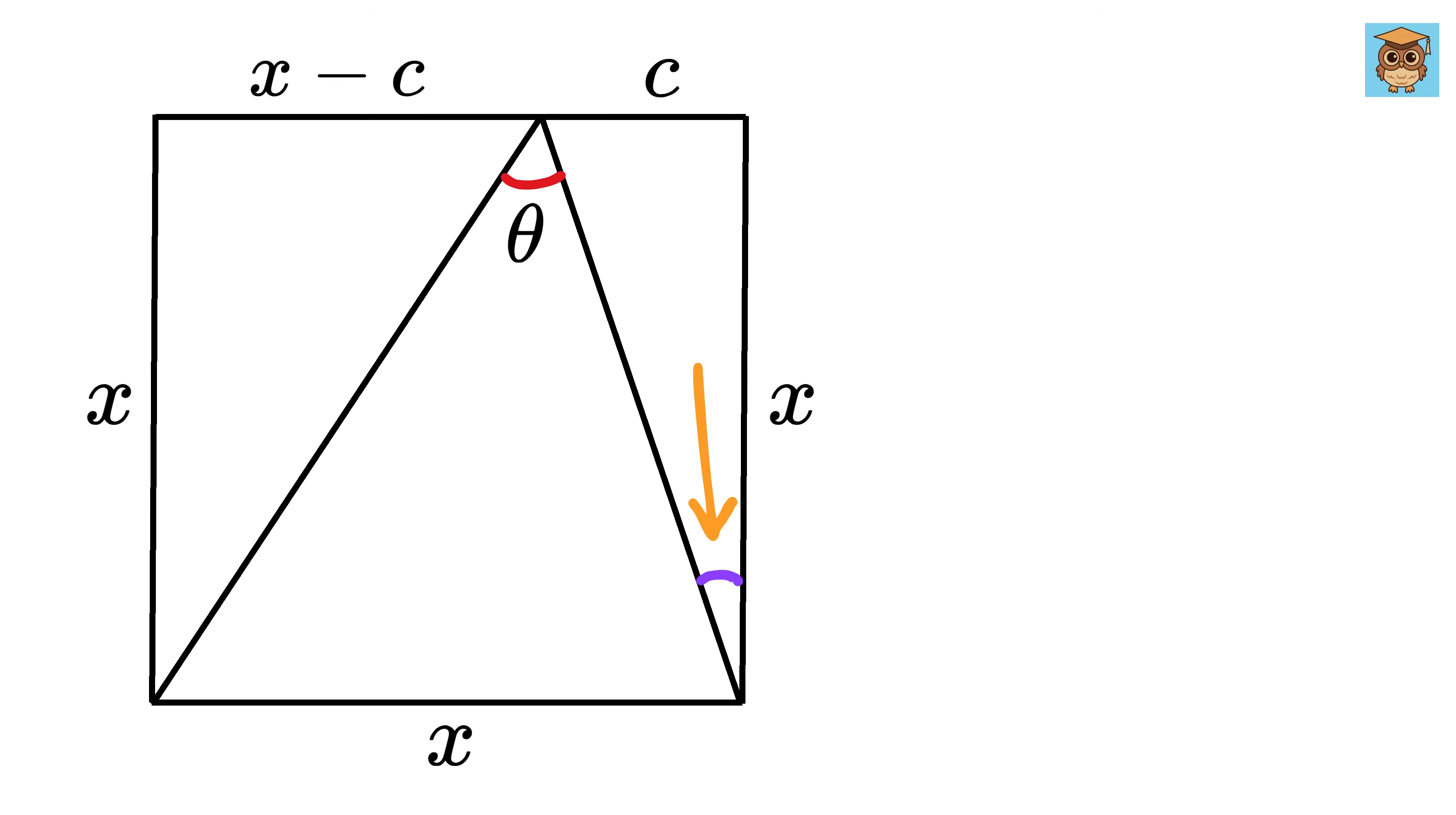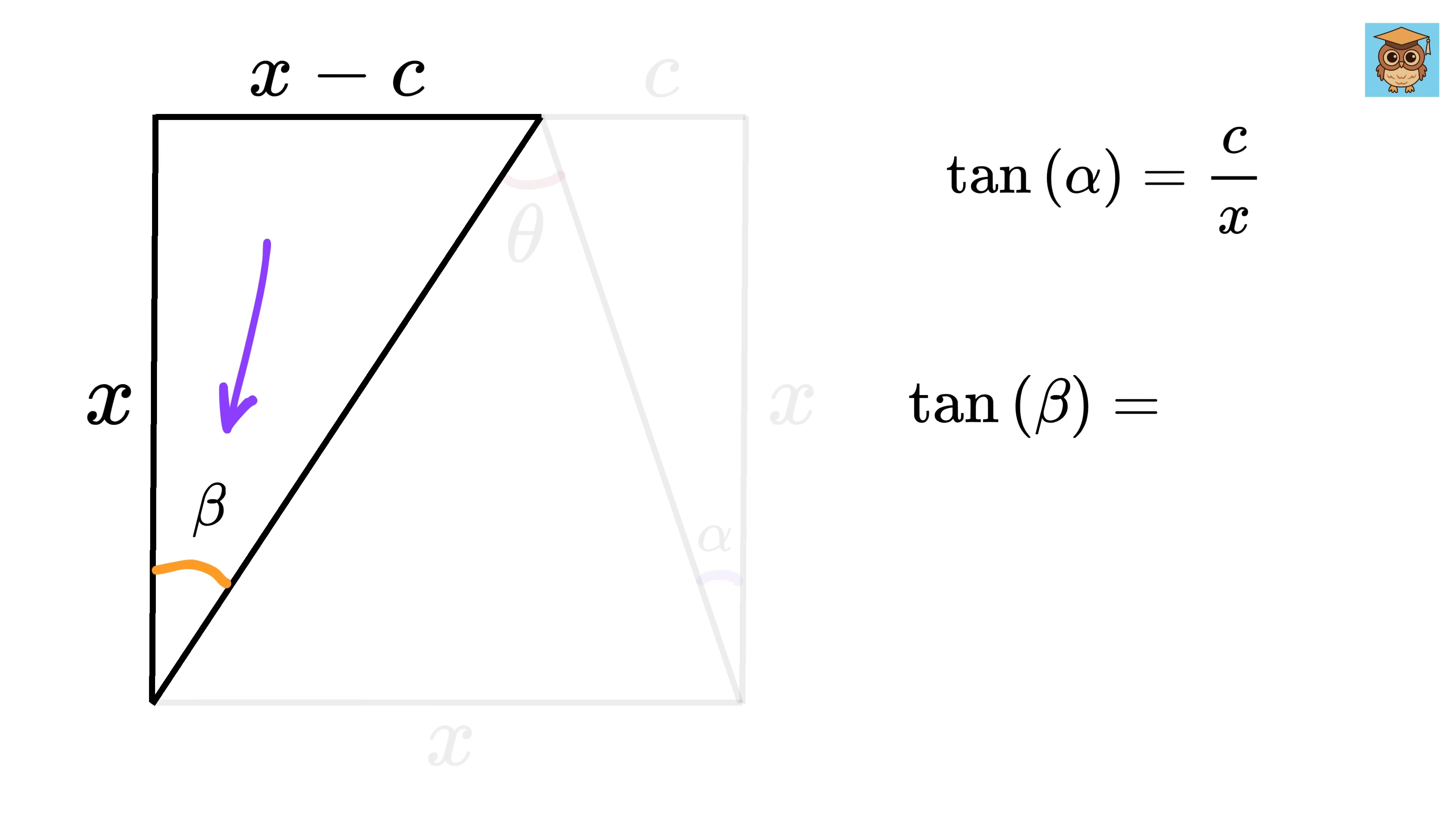Next, let us label this angle as alpha and this angle as beta. So look at this right triangle. What will be the value of tan of angle alpha? It will be the opposite side, or c, over the adjacent side, or x, right? Then consider this right triangle. What will be the value of tan of angle beta? It will be the opposite side, or x minus c, over the adjacent side, or x, right? So it will be x over x minus c over x, or 1 minus c over x.